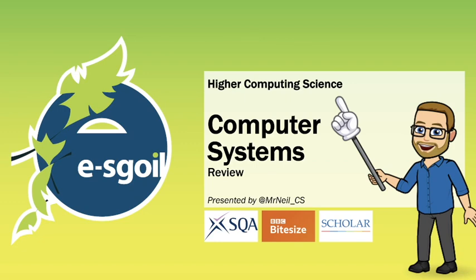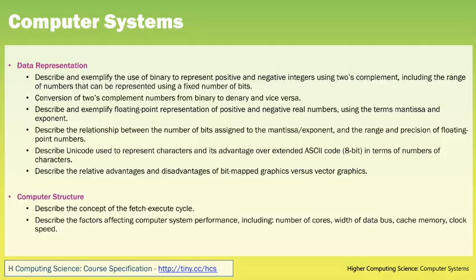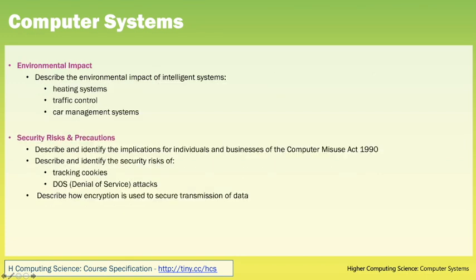Hello folks, it's Mr Neil here and in this video I'm going to review the Higher Computing Science Computer Systems Unit. This unit is made up of four main areas: data representation, computer structure, environmental impact, and security risks and precautions. You'll find the full specification for the Computer Systems Unit within the Higher Computing Science course specification, which is available on the SQA website.